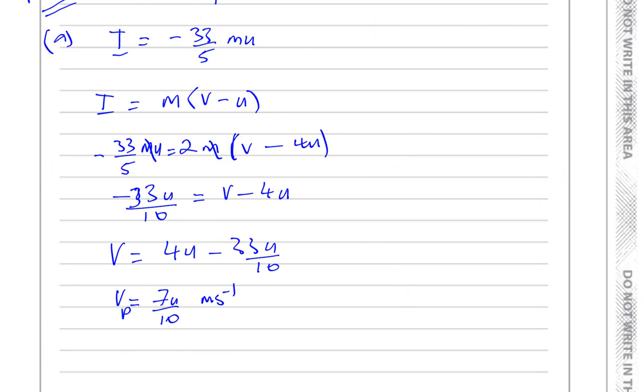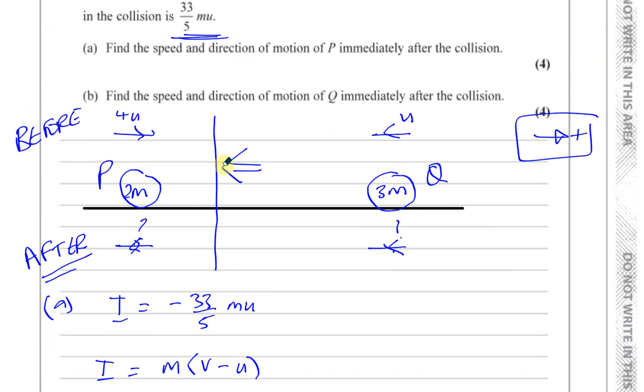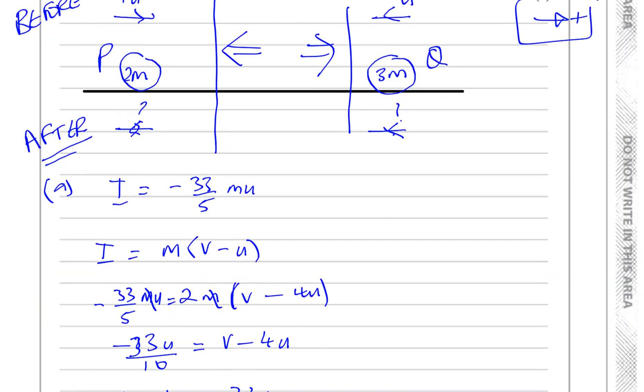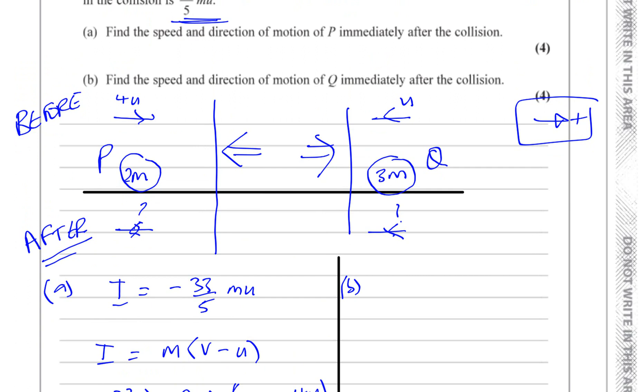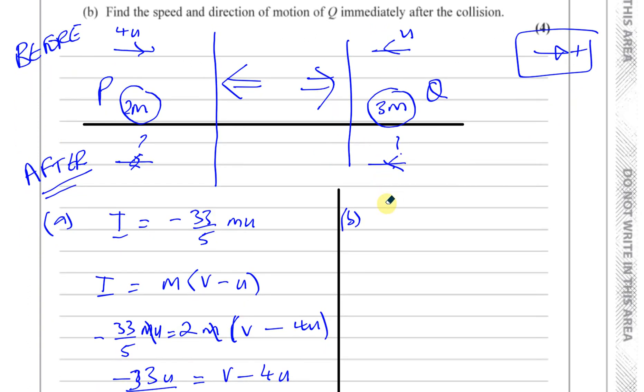We used the fact that the impulse is 33 over 5 or negative 33 over 5 because impulse is what caused it to change direction. So impulse must be acting in that direction. And for Q, the impulse is going to be acting in this direction. And Q is moving in this direction. The examiners don't like you to make two columns, they like you to continue on the next page, but I'm going to just make two columns for the sake of not having to keep going back and forth.